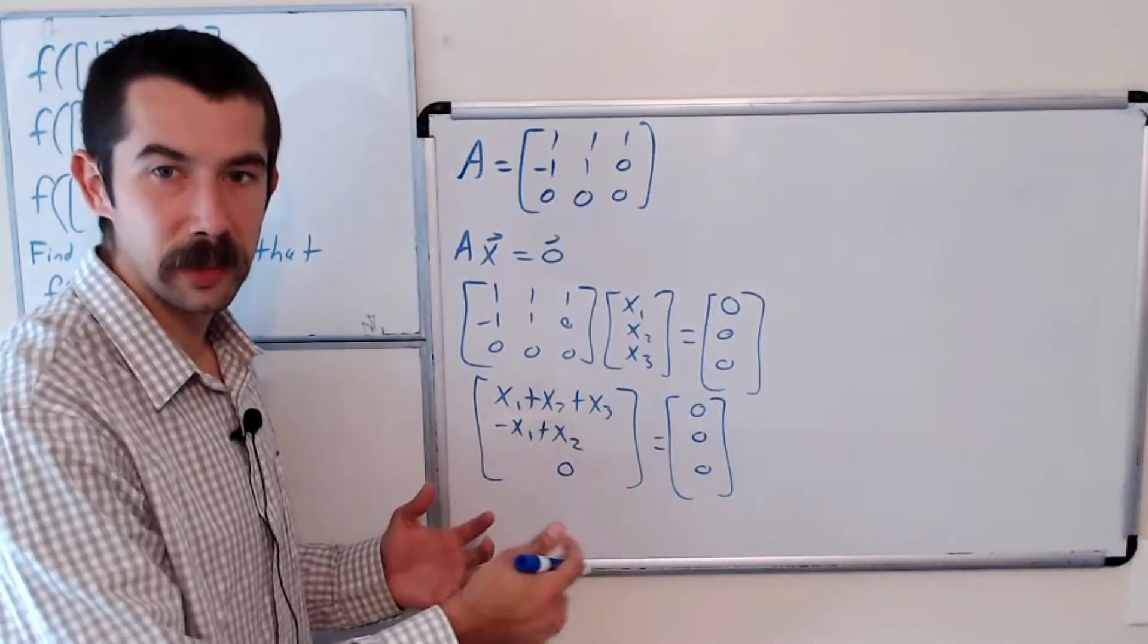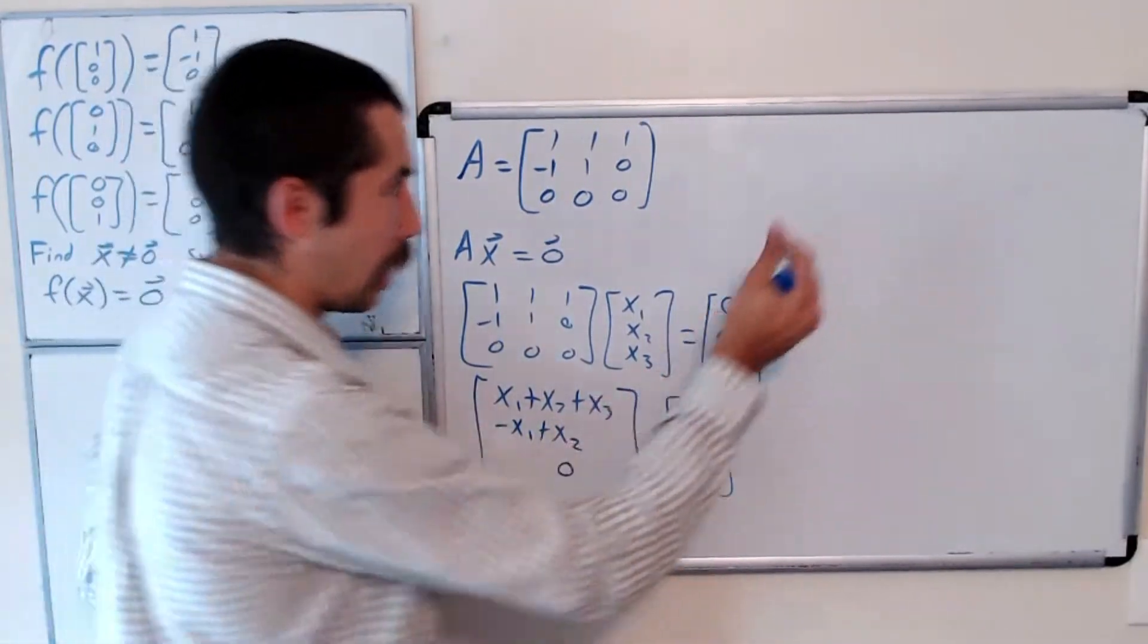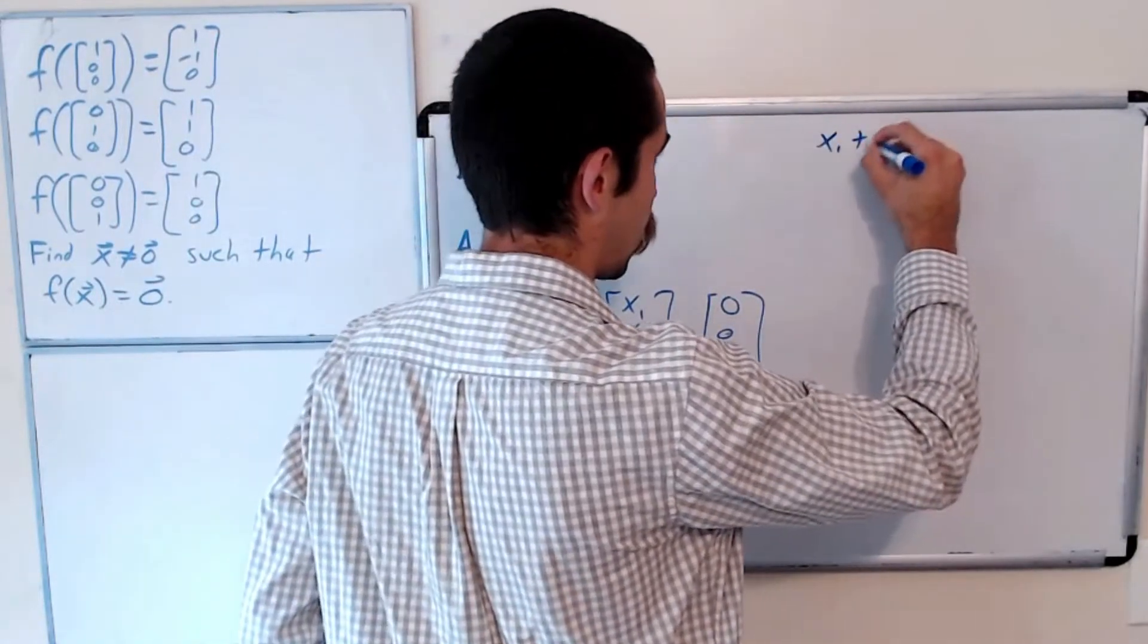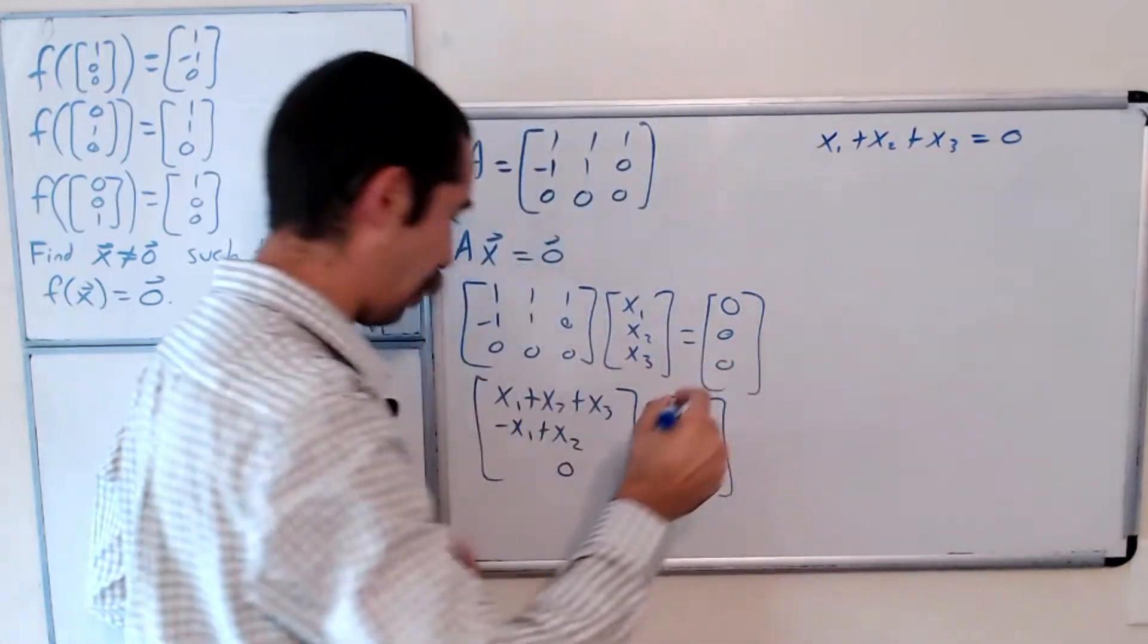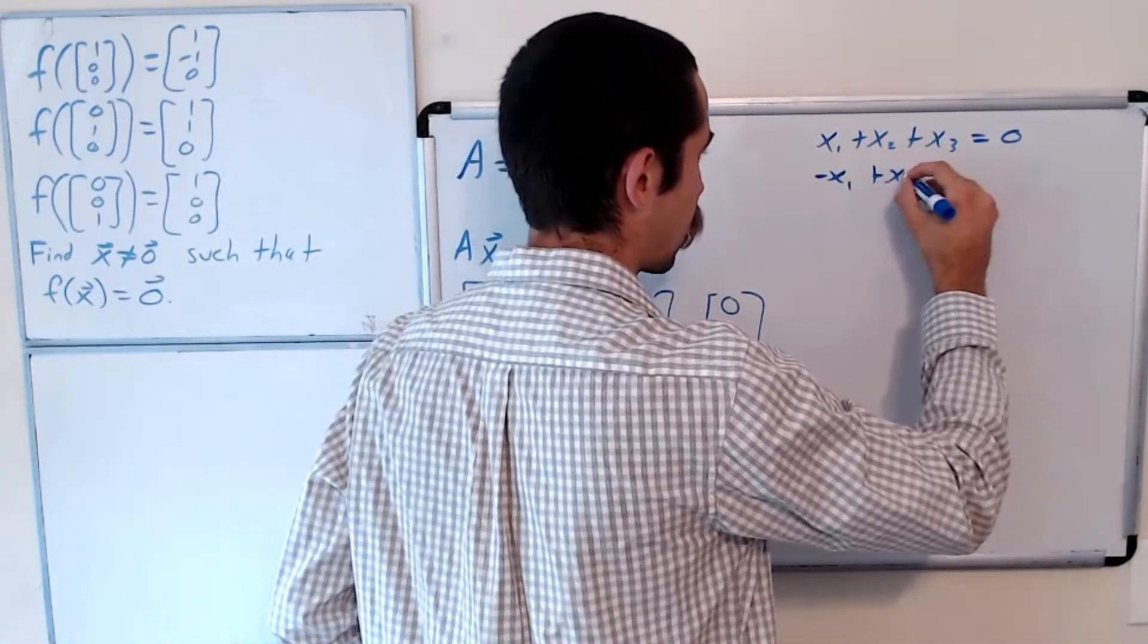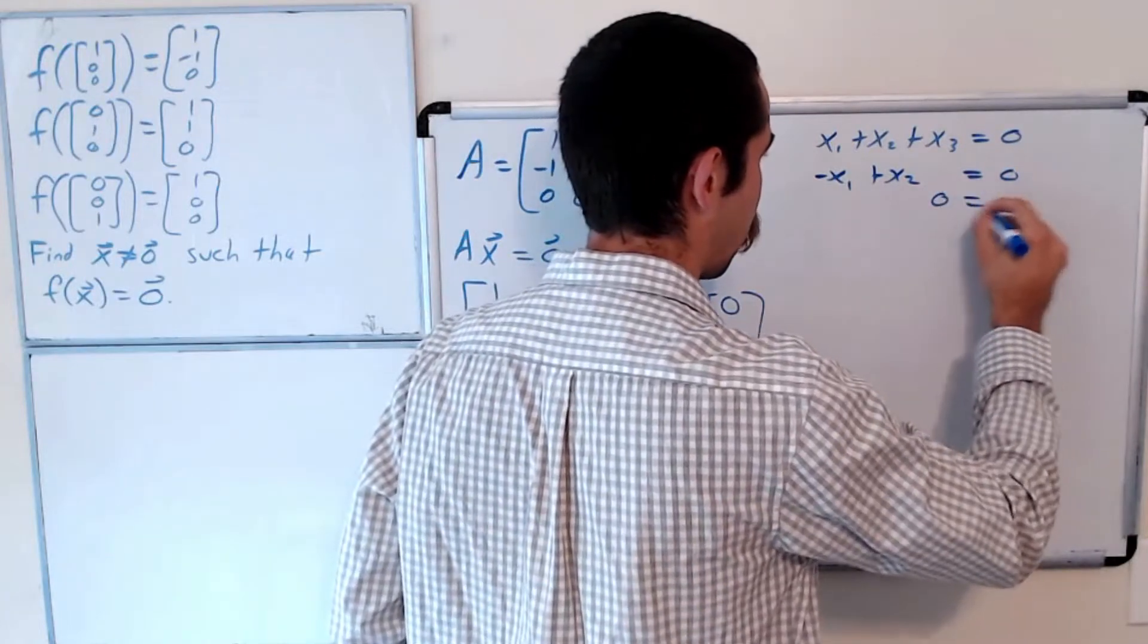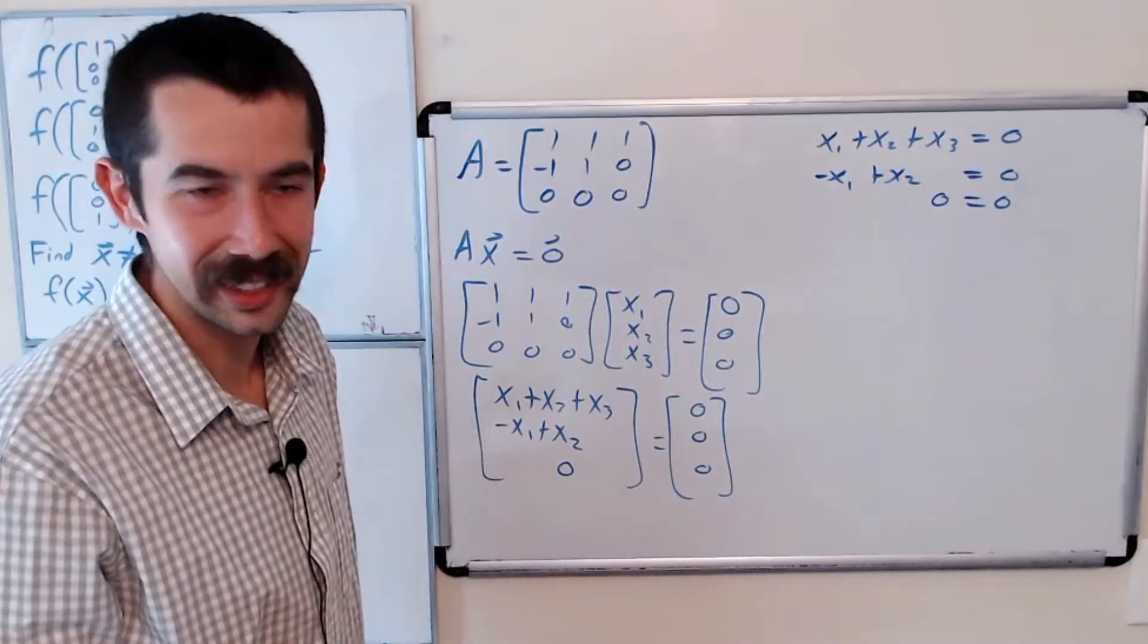Okay, so for two vectors to be equal, each of their entries are equal to each other. So we have x1 + x2 + x3 = 0, and we have -x1 + x2 = 0. And then the last equation is just 0 = 0, which gives us no new information, but at least it means our system is consistent.